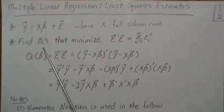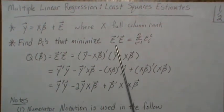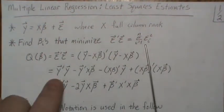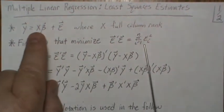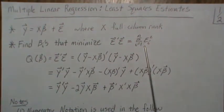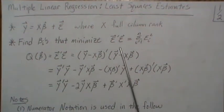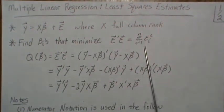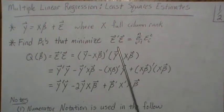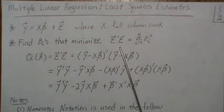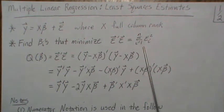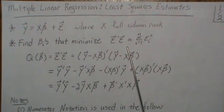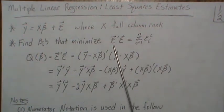Now let's find the betas that minimize the squared error. In simple linear regression we looked at this. So the error term — if we subtract this over to the other side and find the betas that minimize the squared error, which is this in scalar notation — but we're going to try to work in matrix notation as much as possible.